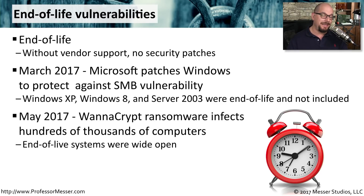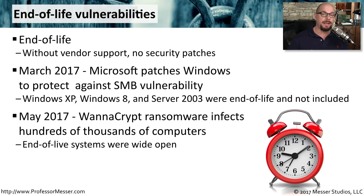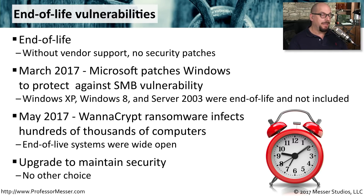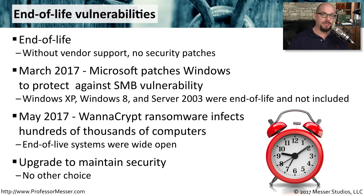In May 2017, WannaCrypt ransomware arrived and took advantage of those vulnerabilities. Hundreds of thousands of computers were infected, and all of those systems were wide open. Microsoft had to go back and create patches for these end-of-life systems because this was such a vast vulnerability. Ultimately, the answer for an end-of-life vulnerability is not to allow the end of life — it's to always upgrade to the latest version of the software or operating system so that you continue to get those security patches.